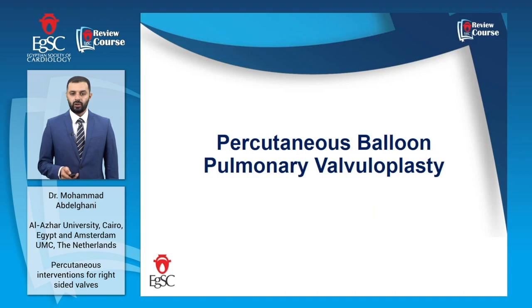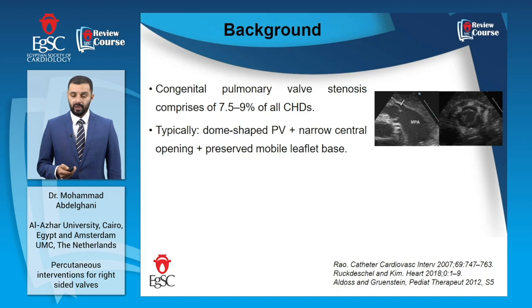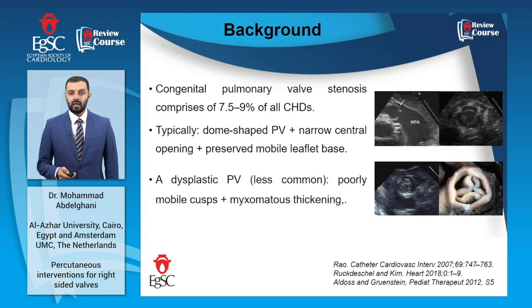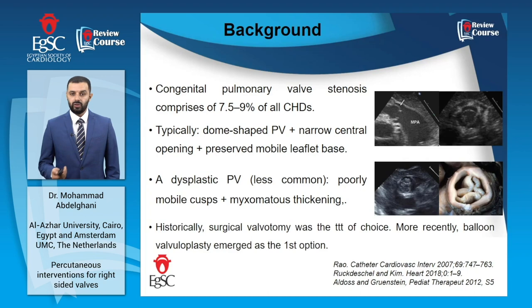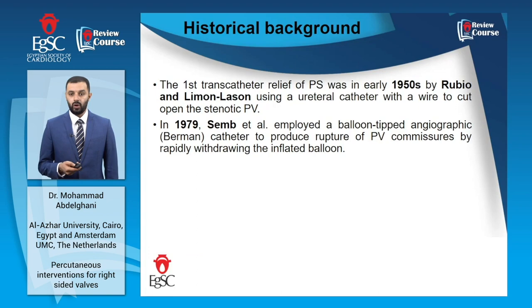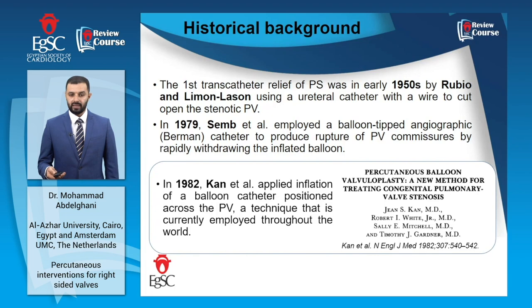Starting with balloon valvuloplasty for the pulmonary valve, the typical phenotype is the dome-shaped pulmonary valve with a narrow central opening. A less common but more severe pathology is the so-called dysplastic pulmonary valve. While surgery used to be the only treatment for these conditions for decades, balloon valvuloplasty has been introduced since the early 1950s, and percutaneous balloon valvuloplasty was introduced in 1982 by Kan et al.